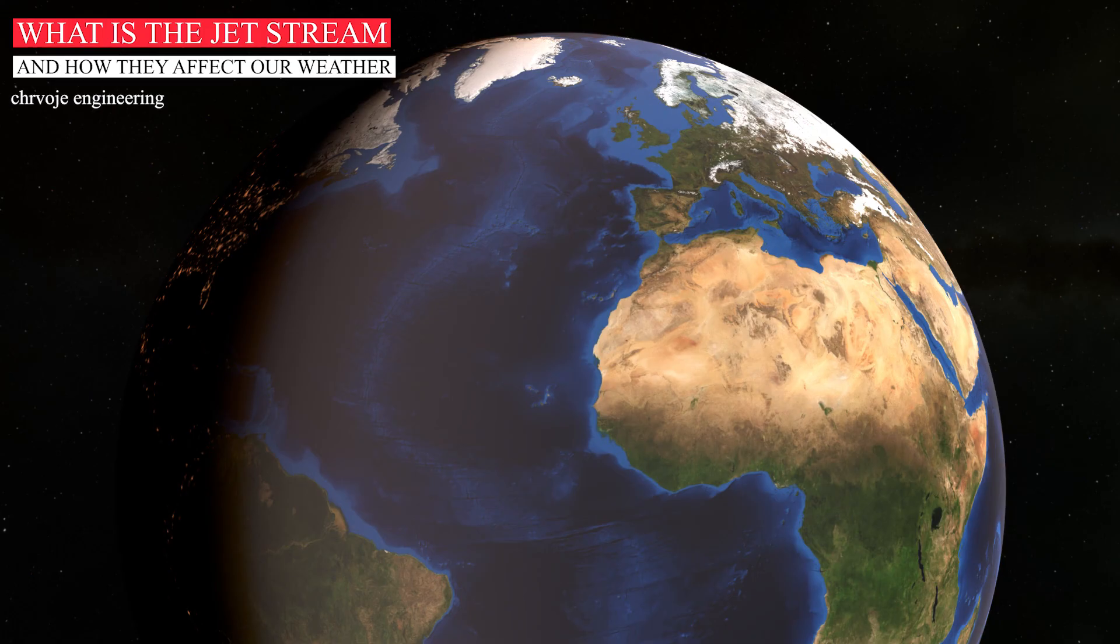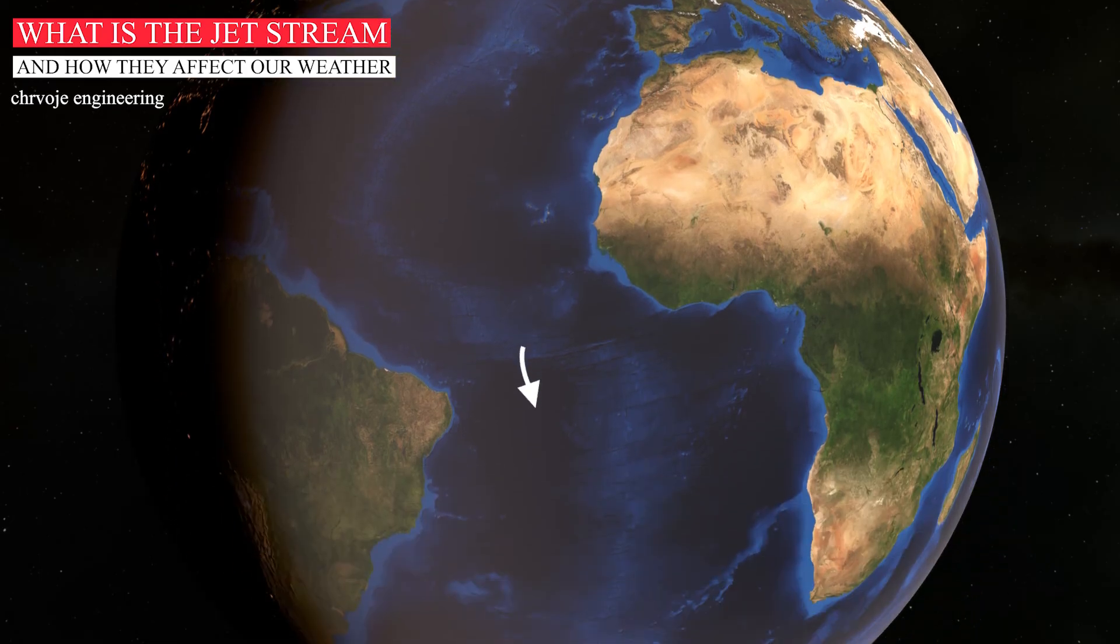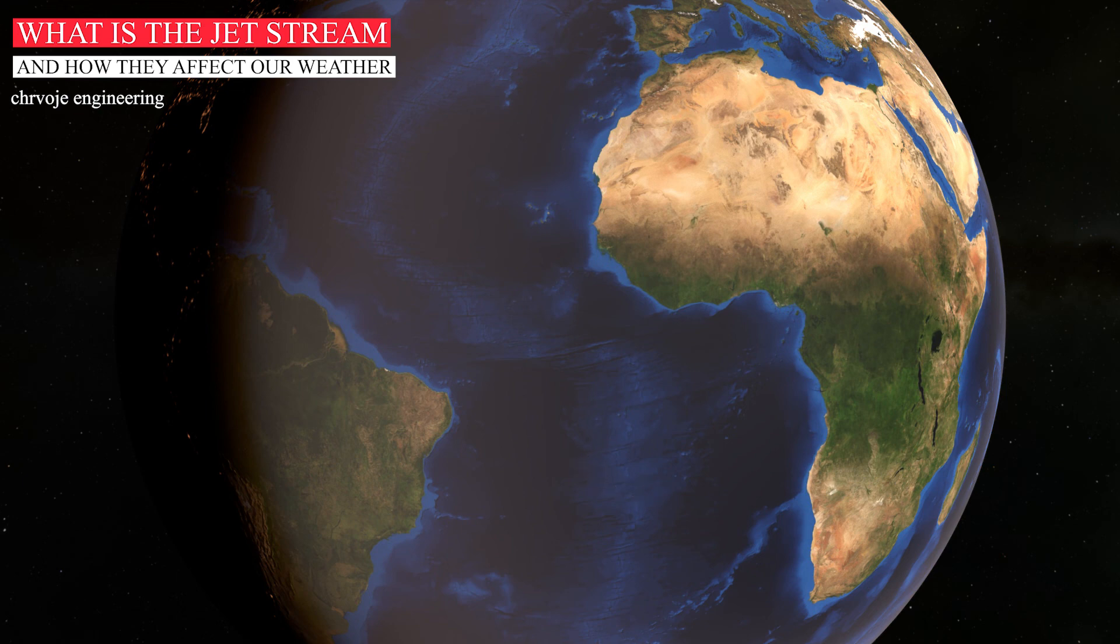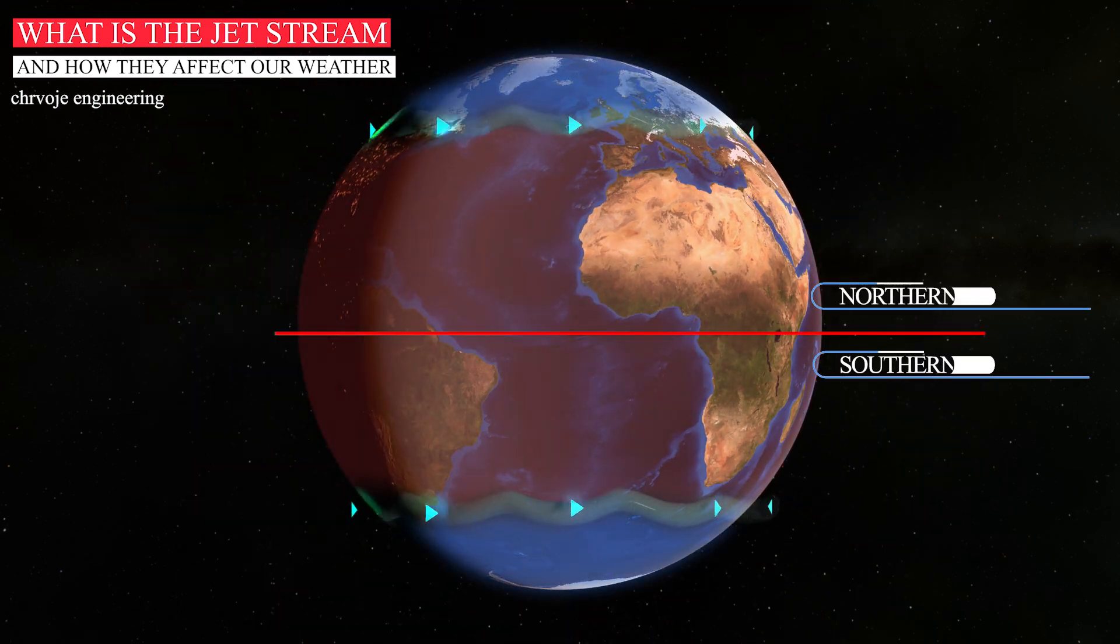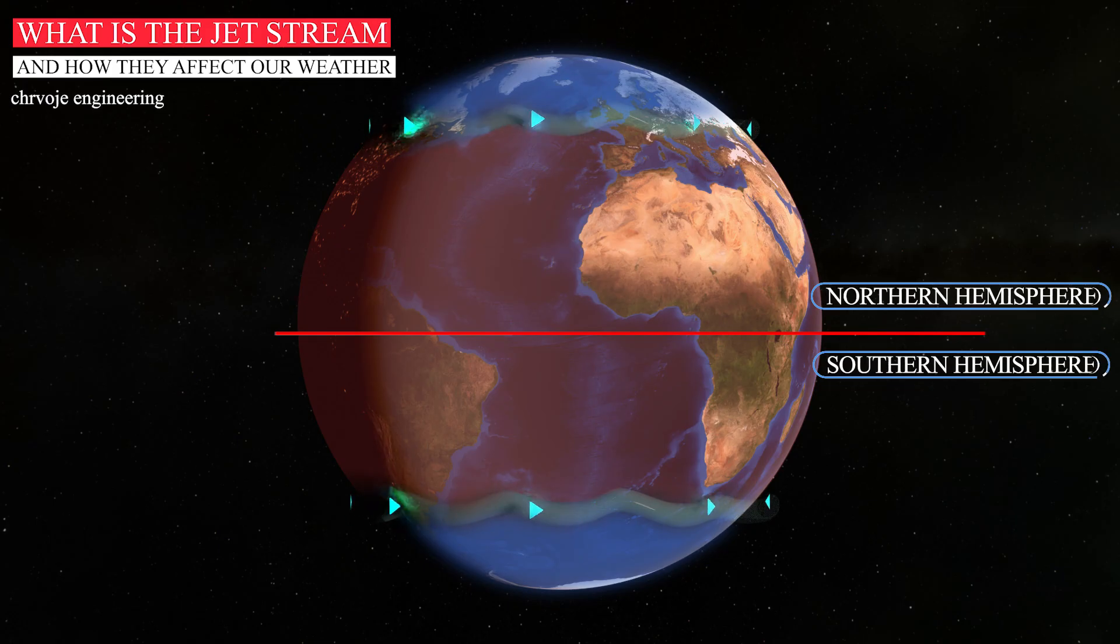But the Coriolis force resulting from the Earth's rotation causes the air to move to the right of the direction of motion in the northern hemisphere and to the left of the direction of motion in the southern hemisphere. The jet stream travels parallel to temperature gradients in both hemispheres, flowing from west to east.